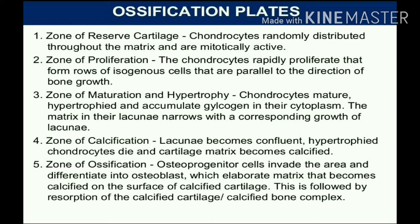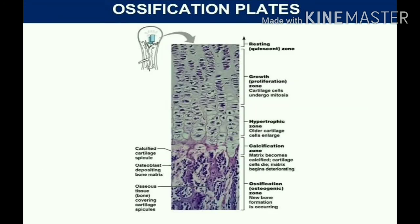In the zone of ossification, osteoprogenitor cells invade the area and differentiate into osteoblasts, which elaborate matrix that becomes calcified on the surface of the calcified cartilage. This is followed by reabsorption of the calcified cartilage, forming a calcified bone complex.